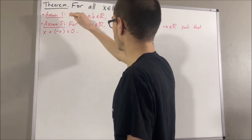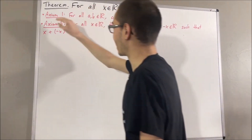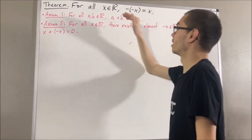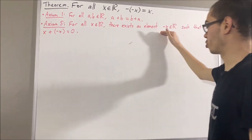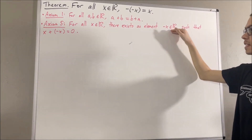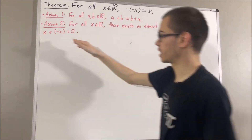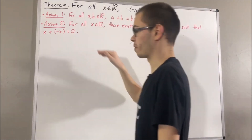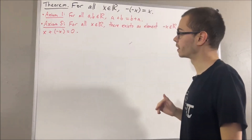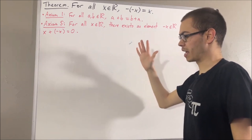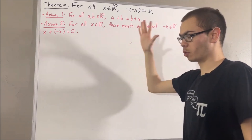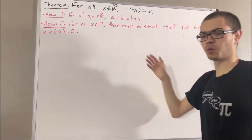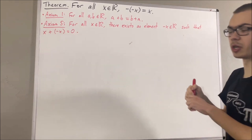Axiom 1 is just the commutative law, and Axiom 5 tells us that for every real number x, there exists a real number which we call negative x, that satisfies the property x plus negative x is equal to zero. We're also going to be using a property that we have proven: the cancellation law of addition.